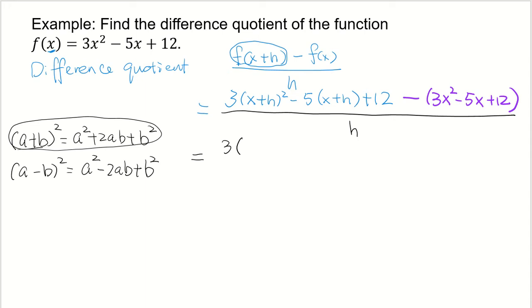So 3 times, first of all, a squared which is x squared, plus 2 times x times h plus b squared here is h squared. All right, then minus 5 times x plus h. I'm going to distribute this negative 5 to x and h. I have minus 5x minus 5h plus 12.